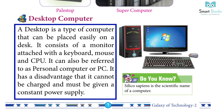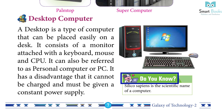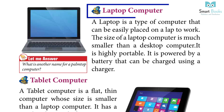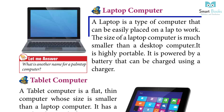A desktop consists of a monitor attached with a keyboard, mouse, and CPU. It can also be referred to as a personal computer or PC. It has a disadvantage that it cannot be charged and must be given a constant power supply. Did you know? Silico Sapiens is the scientific name of a computer.